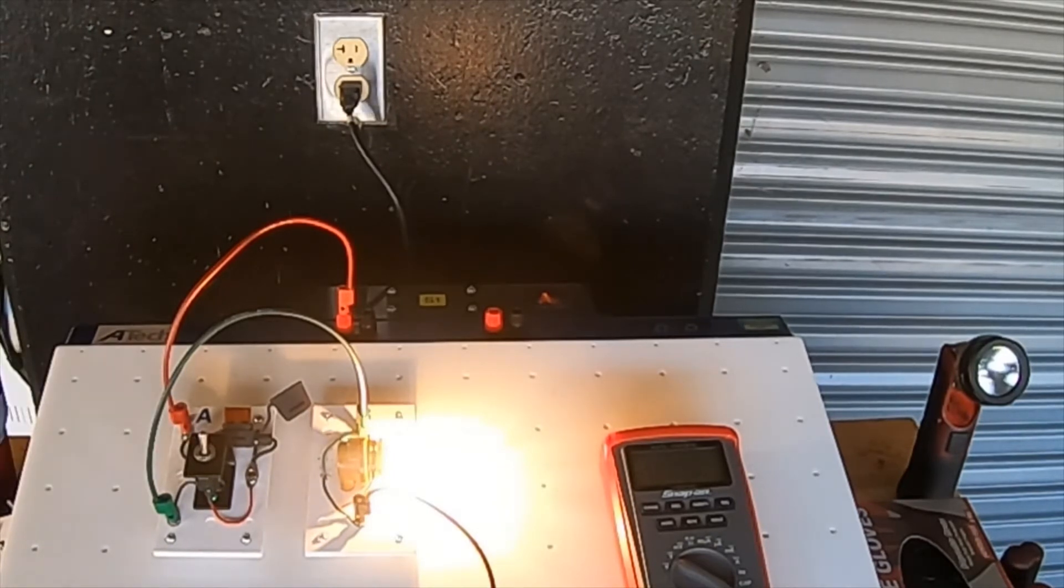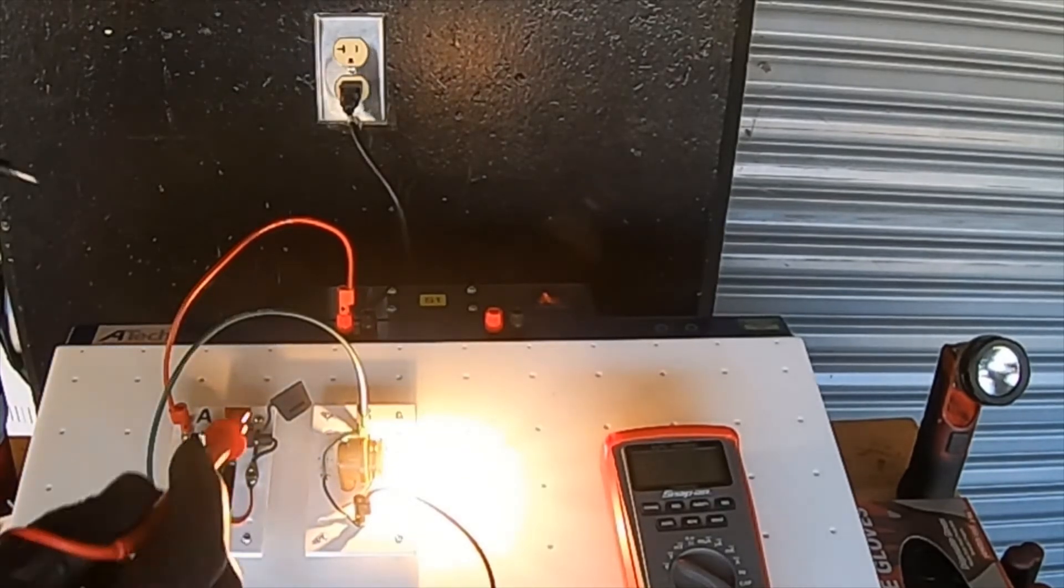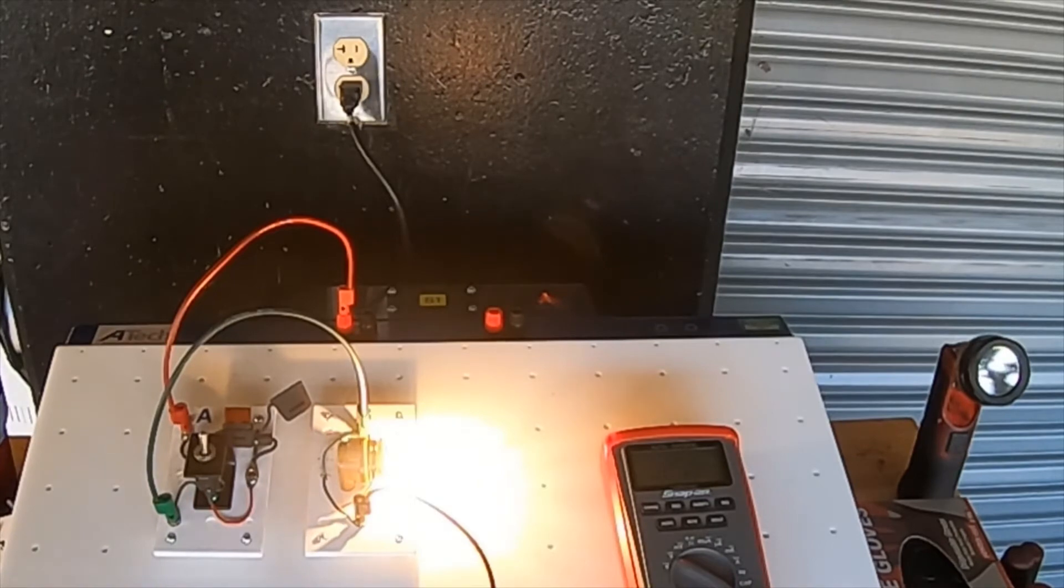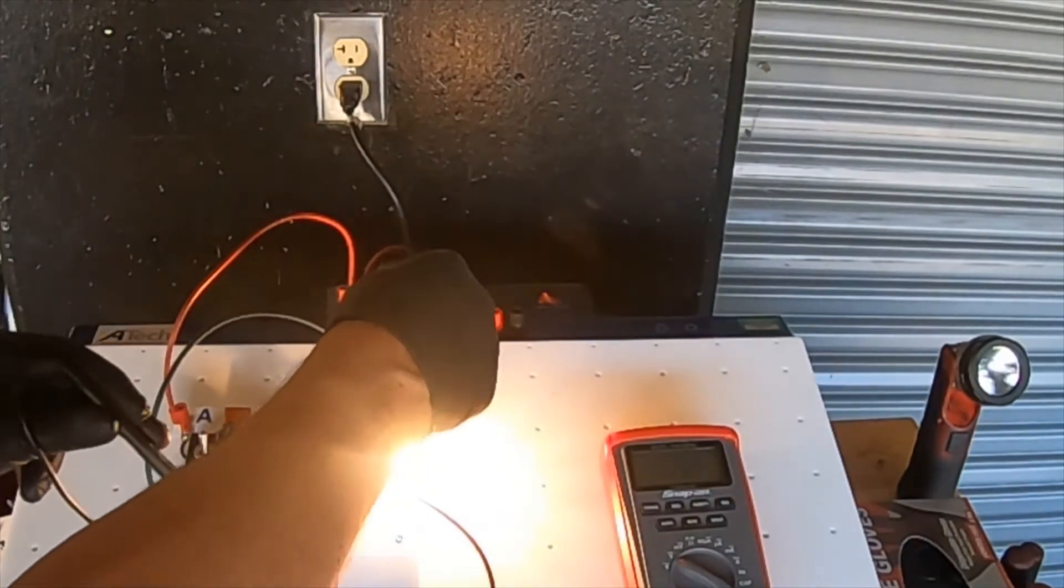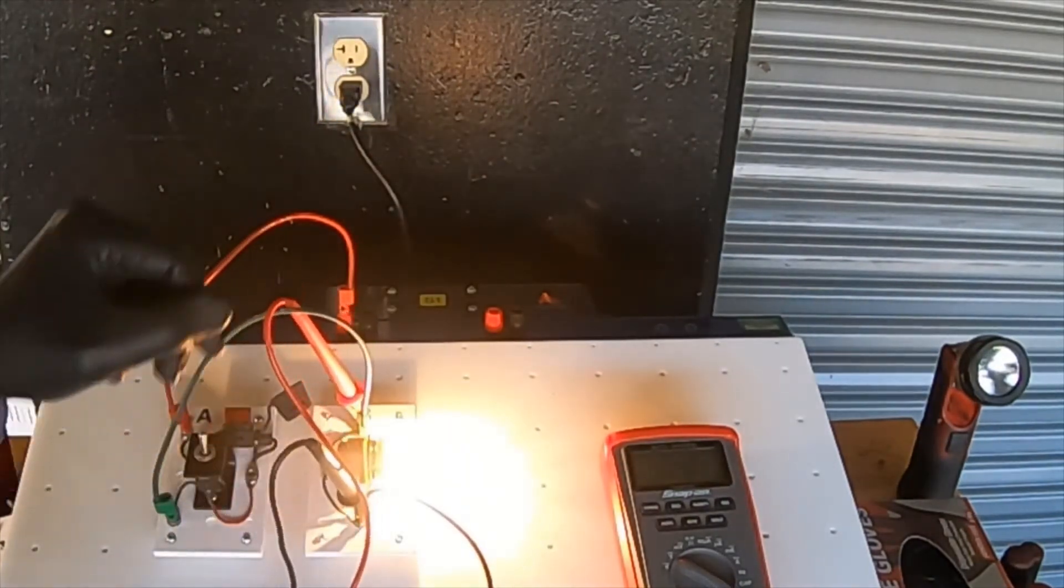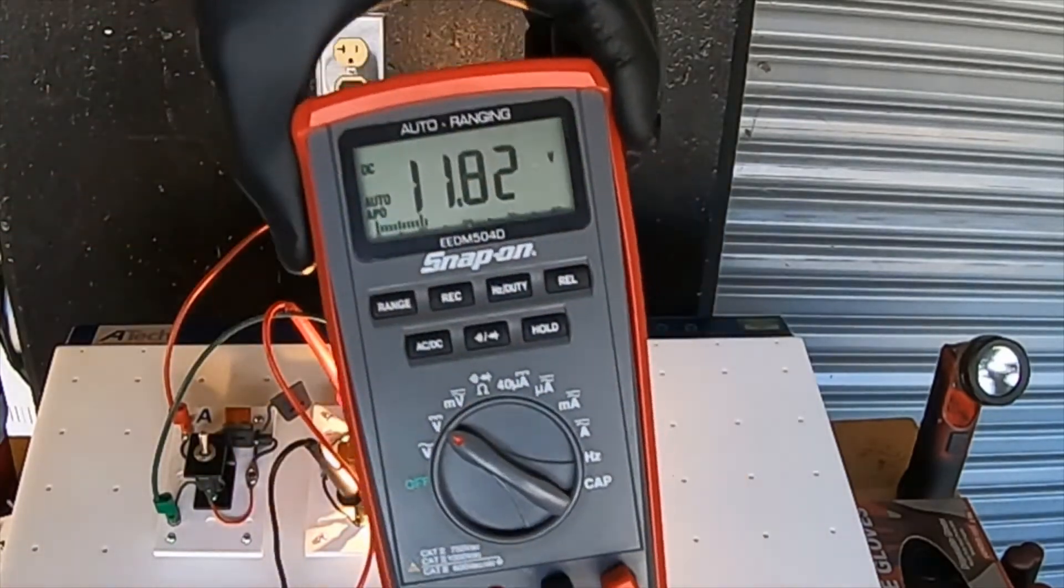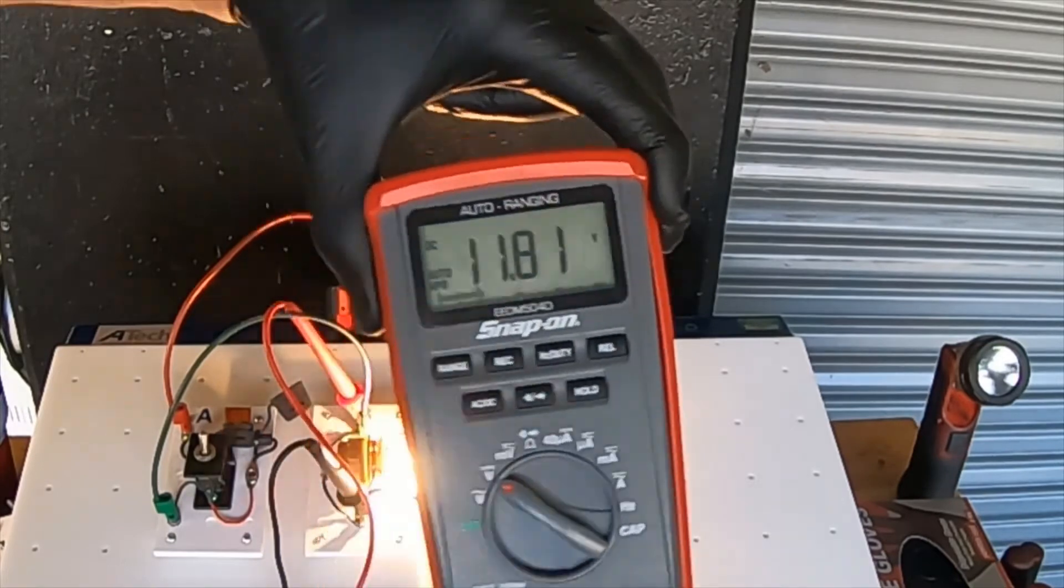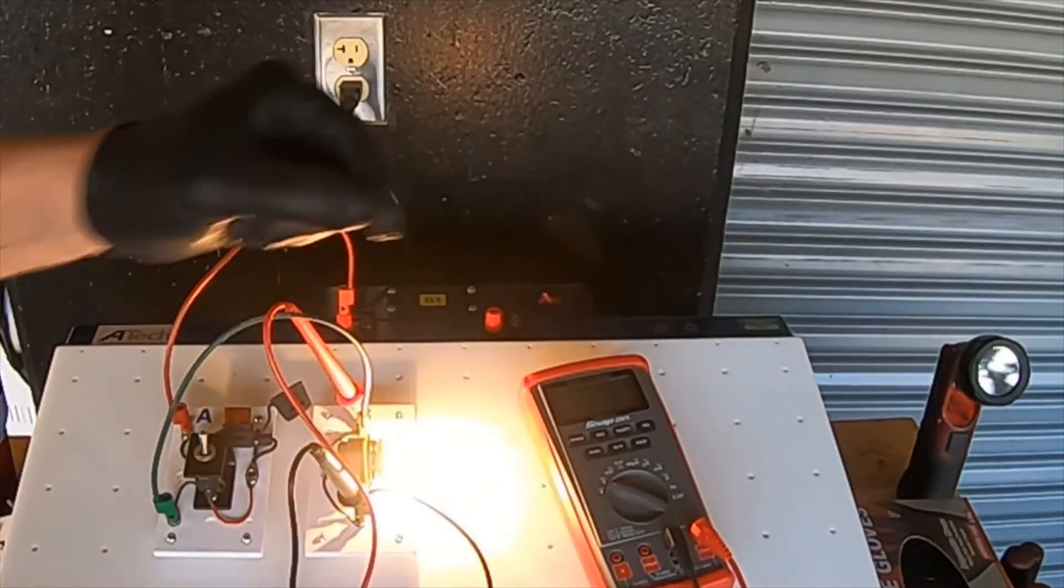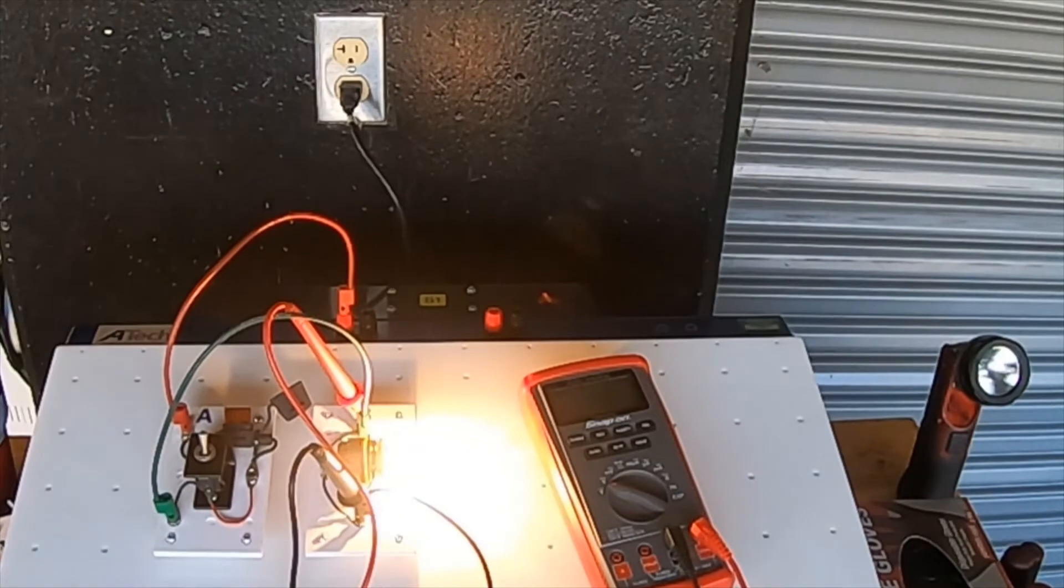Voltage drop across the load - and a load can be a light bulb, it can be a motor or anything that consumes electricity - should be within one half of a volt of source voltage. We know that source voltage is 12.05 volts. So we are now going to measure voltage drop, and it should be within one half of a volt. And you will notice that the meter is reading 11.8, so that tells me the load is working. Or if the light was not on, that would tell me that the load was bad.